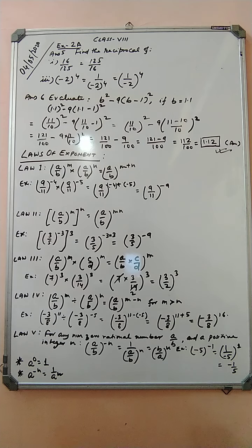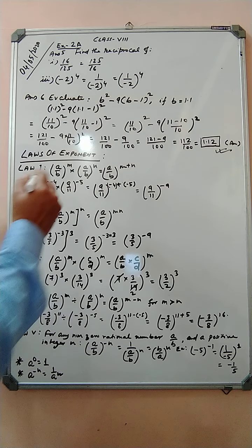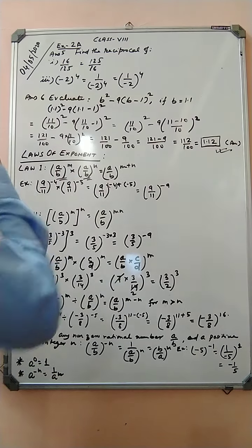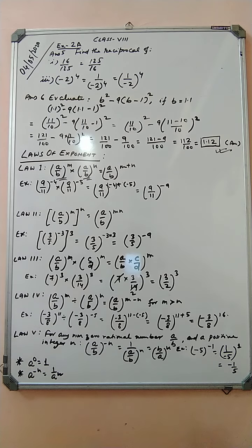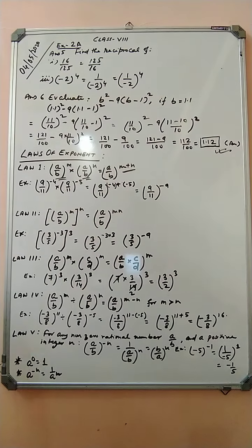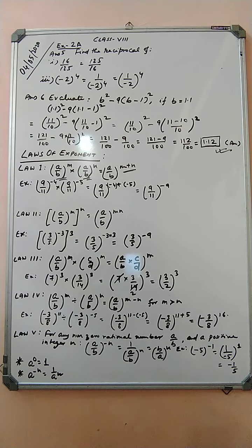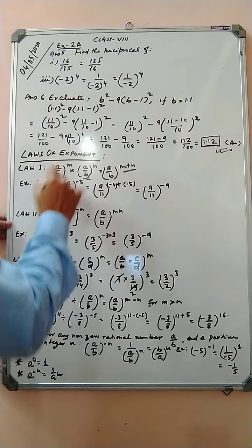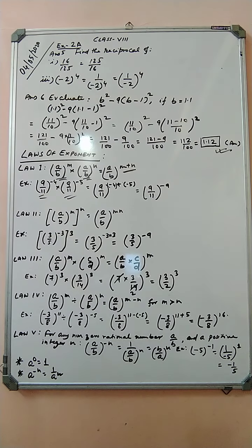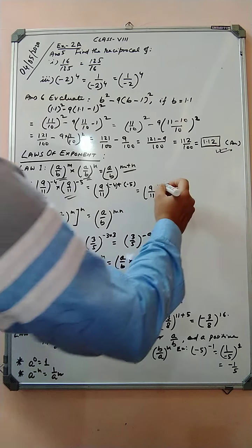Now let us come to the laws of exponent. Law 1: (a by b) to the power m, multiplied by (a by b) to the power n — here the bases are same and the powers are different and it is multiplied — equals (a by b) to the power m plus n, meaning the powers are added. Example: (9 by 11) to the power minus 4 into (9 by 11) to the power minus 5 equals (9 by 11) to the power minus 4 plus minus 5, which is (9 by 11) to the power minus 9.